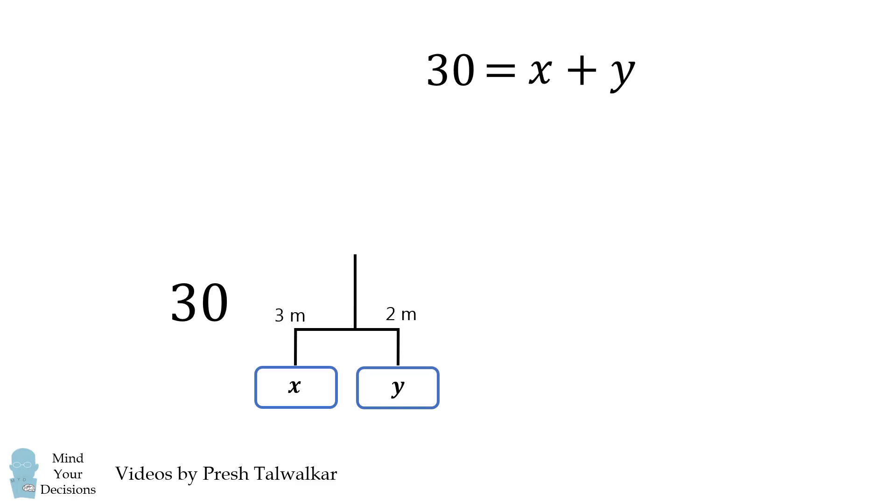Then we use the principle of balancing torque. 3X will be equal to 2Y. We solve for Y, and then we substitute that into our first equation, and then we solve for X. X will be equal to 12, and we substitute back to get Y will be equal to 18.